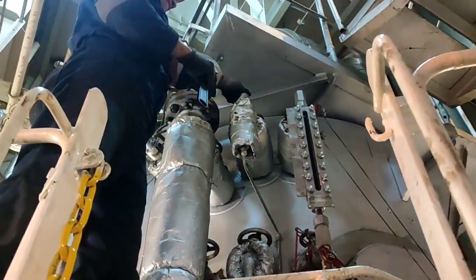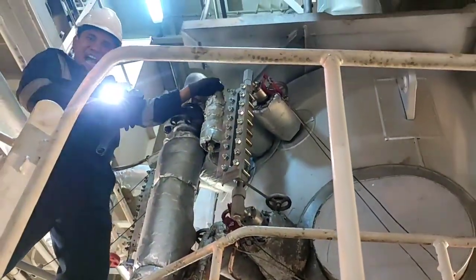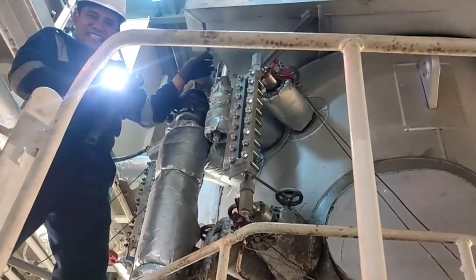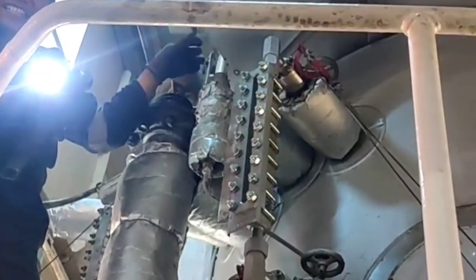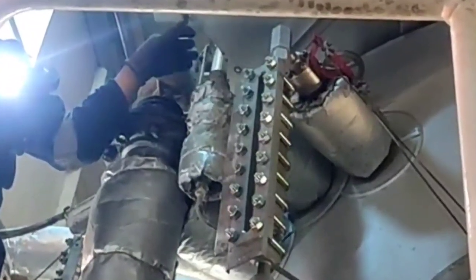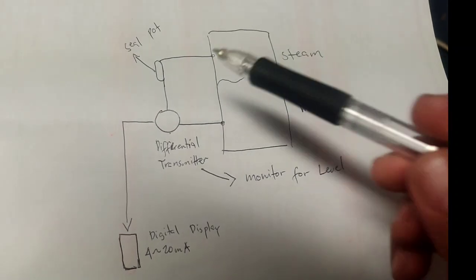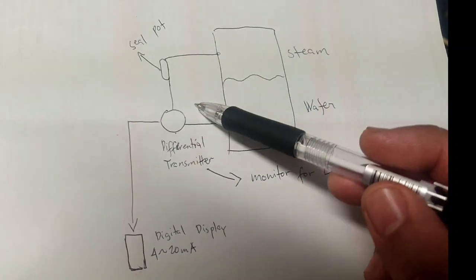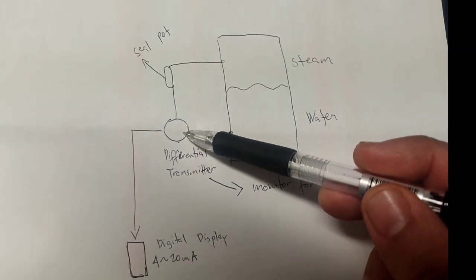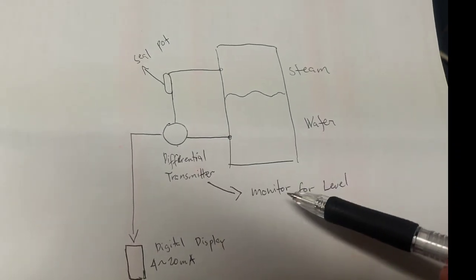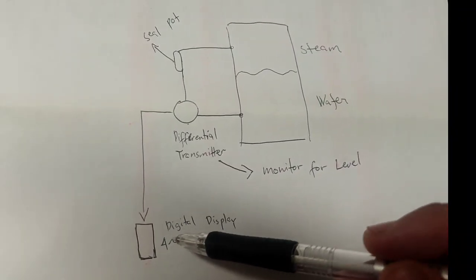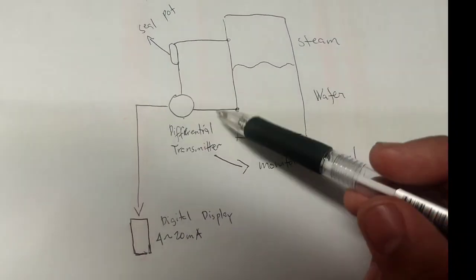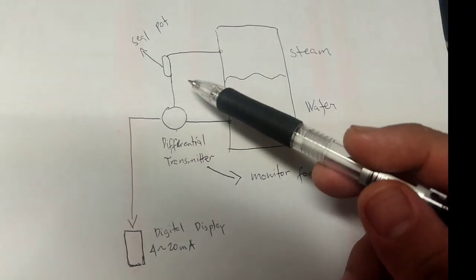At the top, that is the seal pot. Shout out to our first engineer who helped troubleshoot this boiler. The seal pot needs water to send a signal to our differential pressure transmitter — it acts as a barrier. The differential pressure transmitter monitors the level and sends a 4 to 20 mA signal to our level display.